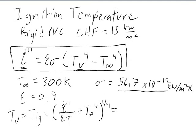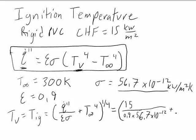And so then we can plug in our numbers and we get 15 over 0.9 times 56.7 times 10 to the negative 12th, plus 300 to the fourth, all to the one-fourth power.